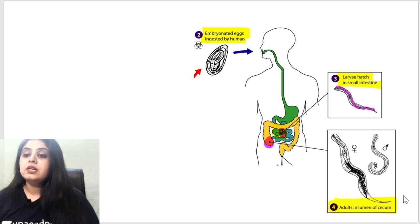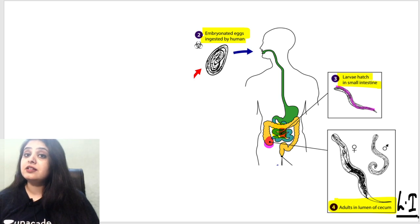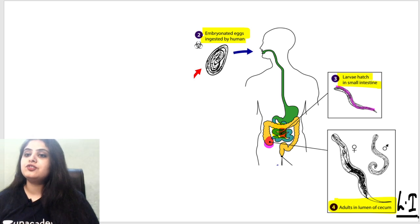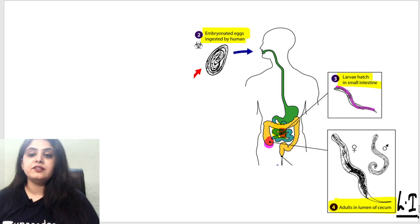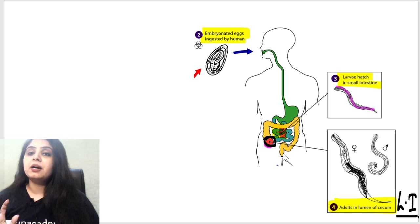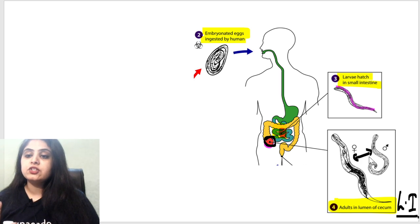So basically this involves large intestinal involvement. If you remember, yesterday we studied Trichuris trichiura, where the large intestine also harbored the adults. Enterobius vermicularis is another organism where the adult worms reside in the large intestine — specifically the cecum.